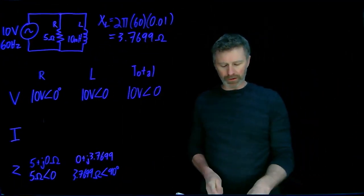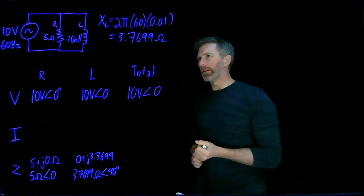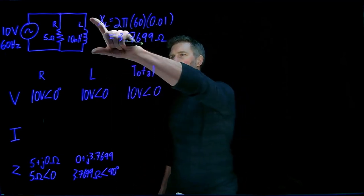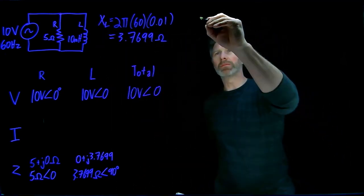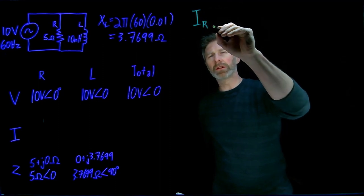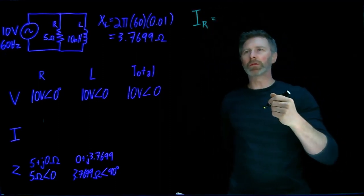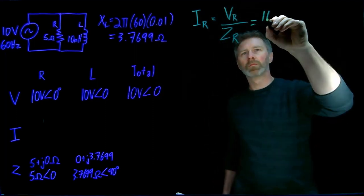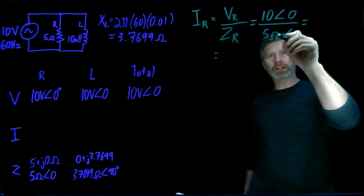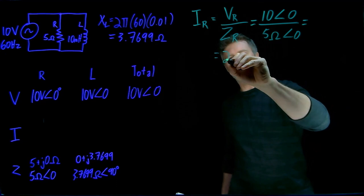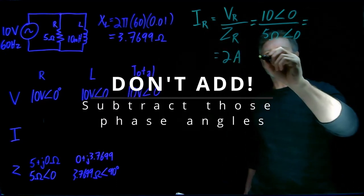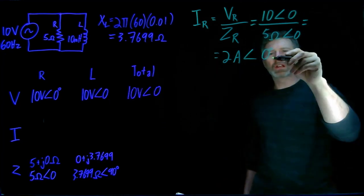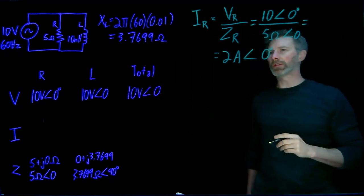The next easiest thing to calculate is the current for each of these devices. Because I know the voltage across the resistor and the voltage across the inductor, I can very easily calculate those currents. For the current through the resistor, we use Ohm's law - the AC equivalent - which is the voltage across the resistor divided by the impedance of the resistor. Dividing the magnitudes gives me 2 amps, and we add the phase angles to get zero degrees. Makes sense - the voltage has a phase of zero degrees, the current has a phase of zero degrees. There is no phase shift through a resistor.